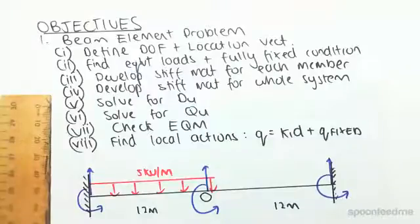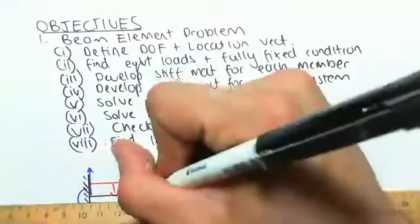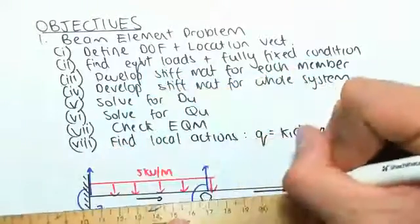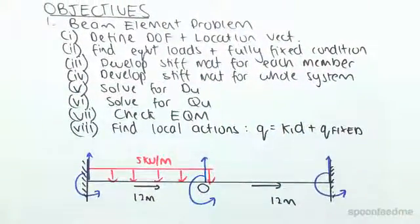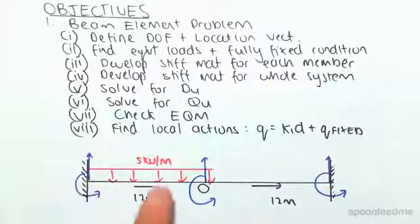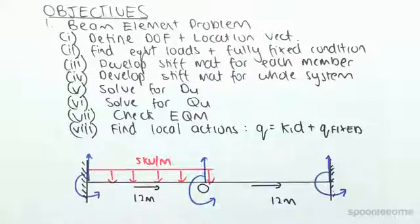So we always label the location vector first. I'm just going to put mine this way. Once again, you could have done any other way, but there's my location vector. I'm now going to find the nodes which are free to rotate or free to move up and down. So that's fixed, fixed, fixed, fixed. This is fixed in the vertical direction, but this roller doesn't have any moment restraints, so this is free to rotate. So I'm going to label that one first.